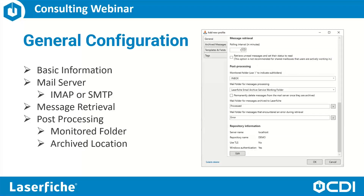Next we can configure message retrieval — how often we are going to poll our mailbox for new mail. In our post processing section, we can choose which folder we are going to be monitoring, along with other options such as the folder that email messages will be moved into once they are processed, or an error folder if the emails are not able to be processed.